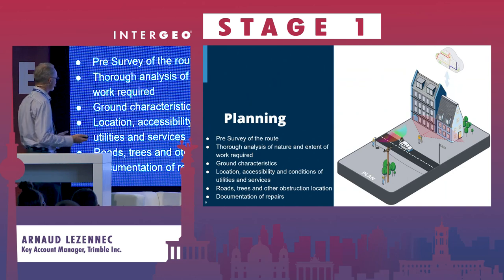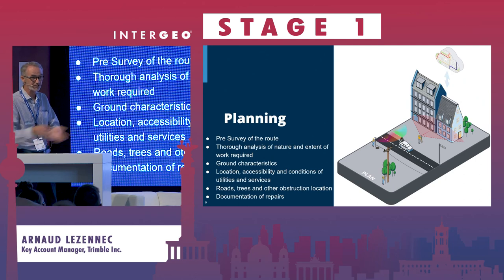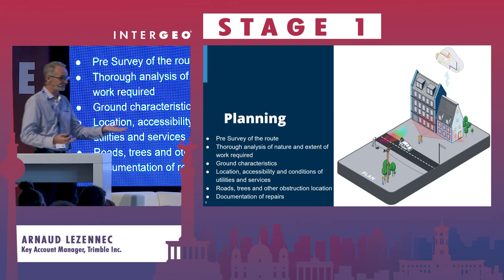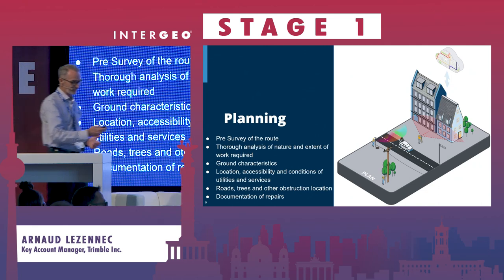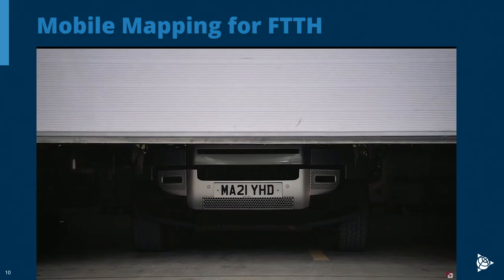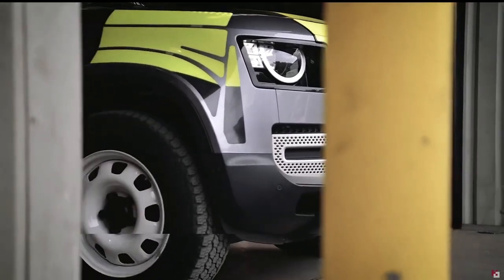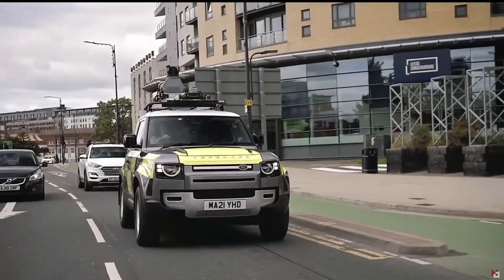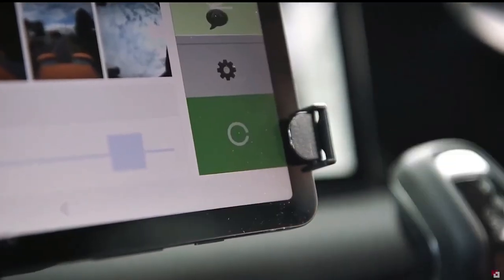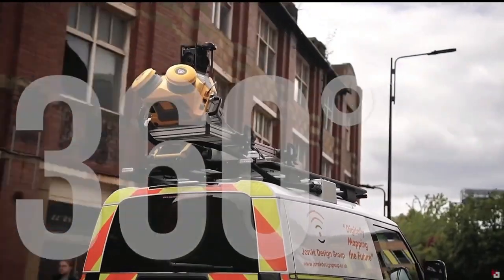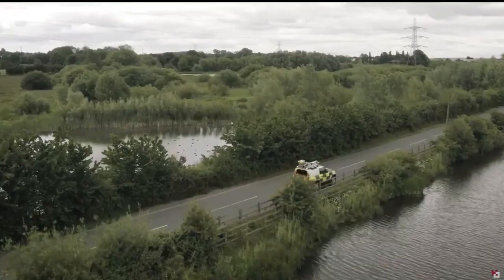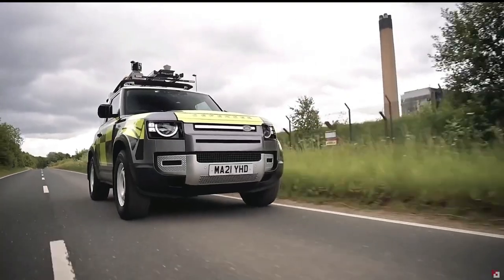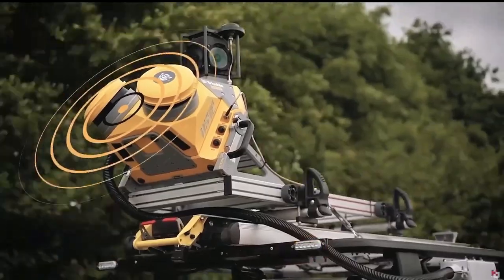Looking at the planning phase, they first have to do a pre-survey of the route to see which way they can go. They need to analyze the nature and extent of the work: what's the ground surface — sand or asphalt? Location, accessibility, trees next to poles — all of those things. For this, they use a mobile mapping system to drive through a city or the countryside and collect point cloud and images simultaneously. This is more accurate than using Google Maps and, critically, up-to-date.